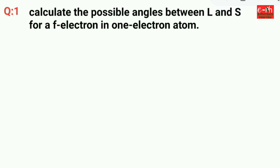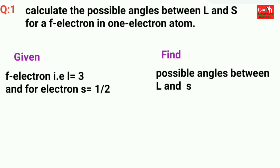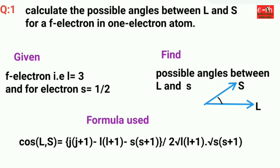To solve this problem, we first see what is given: the F electron means L equals 3, where L is the orbital quantum number, and S equals 1/2 for the electron spin, where S is the spin quantum number. The formula used is: cos(L,S) equals J(J+1) minus L(L+1) minus S(S+1), divided by 2 times √[L(L+1)] times √[S(S+1)], where J is the total quantum number.